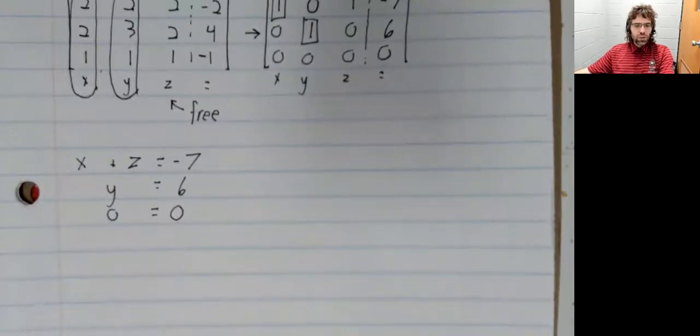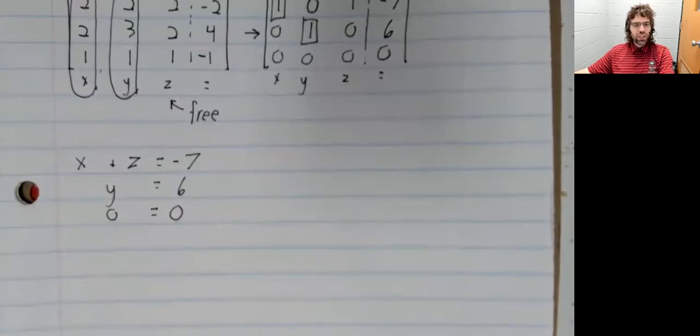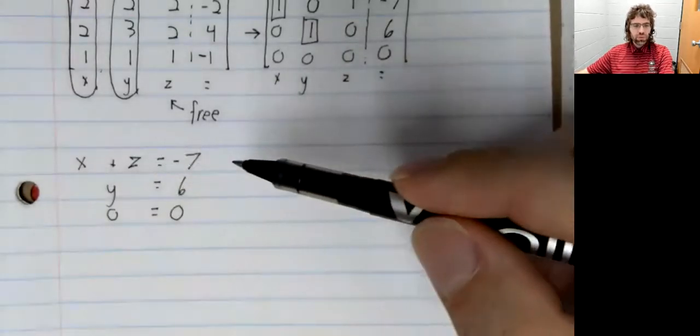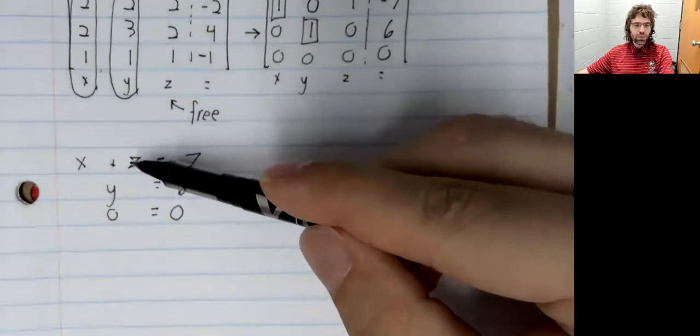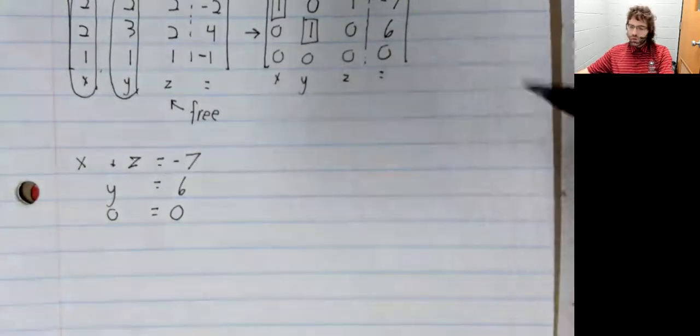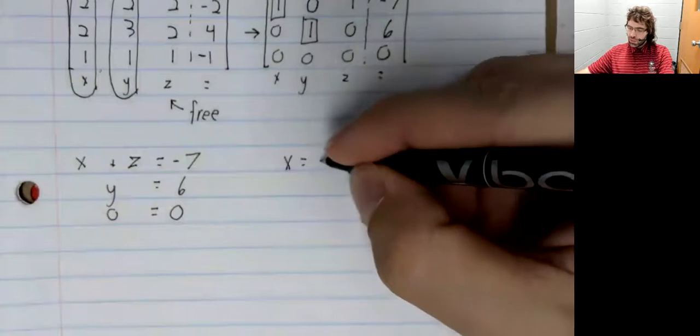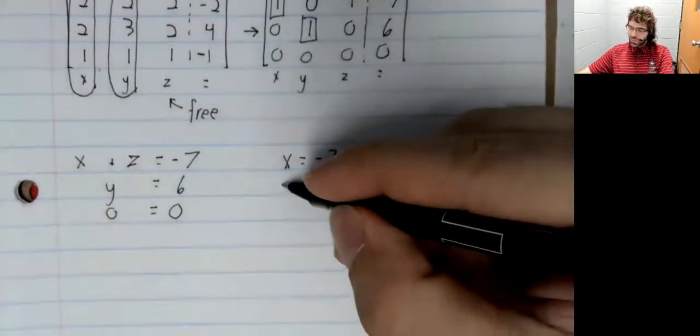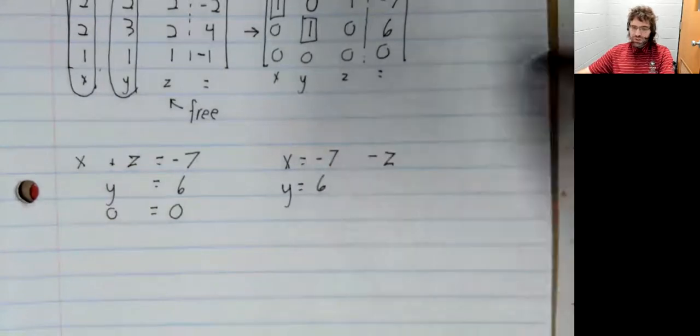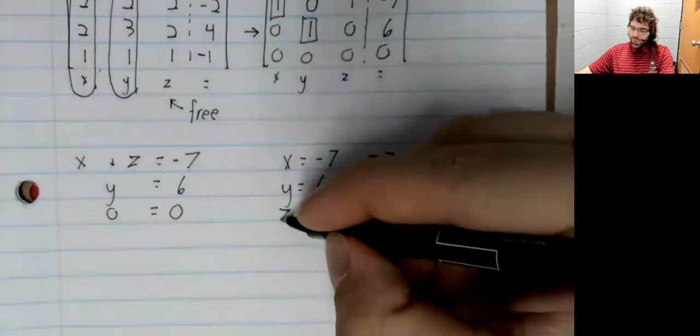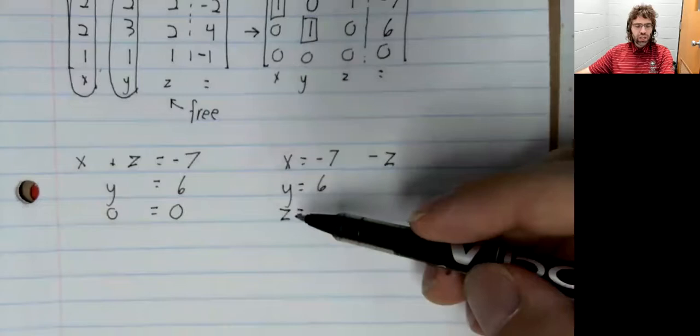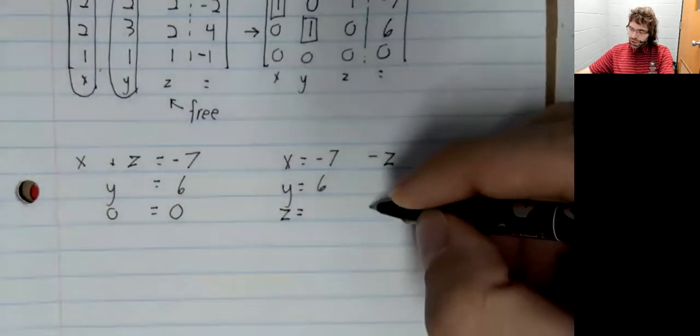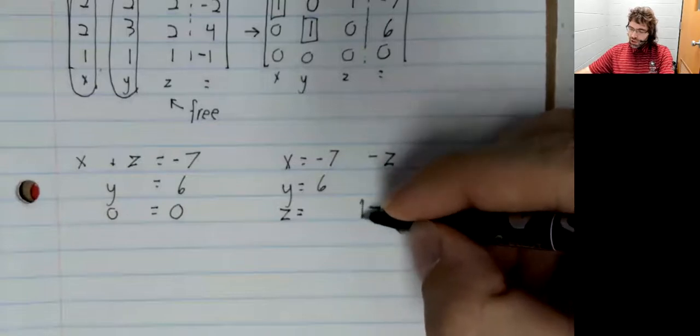And now we're going to deal with this the same way we dealt with the homogeneous example, which if you don't remember, we did two things. First, we brought our free variables, in this case our free variable, we only have one, over to the right. X equals negative seven minus z. Y equals six. And the second thing we did was introduce an equation for our free variable. Z equals z.